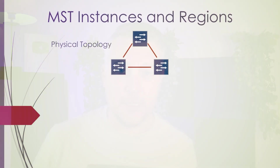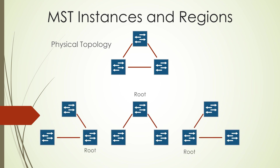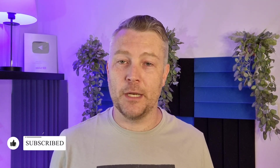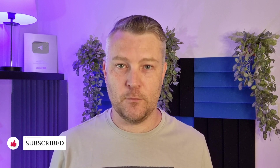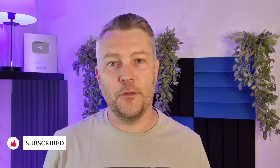MST, or Multiple Spanning Tree, is able to create multiple different instances. VLANs can be mapped to these different instances. There can be several VLANs per instance, and MST will support up to 16 of these instances — one being the default one, and up to 15 more that we can create ourselves.